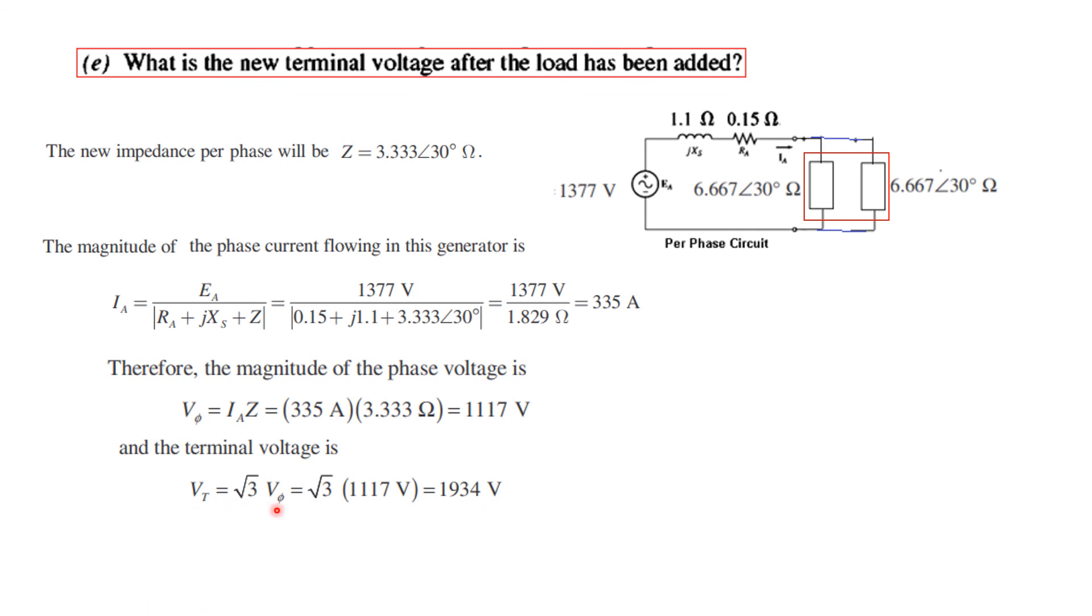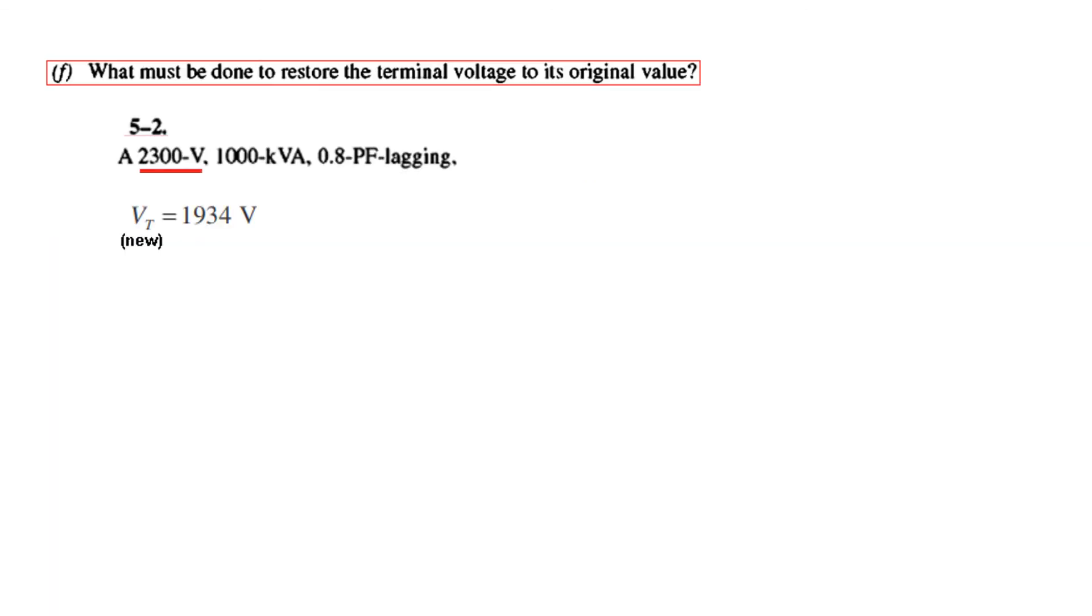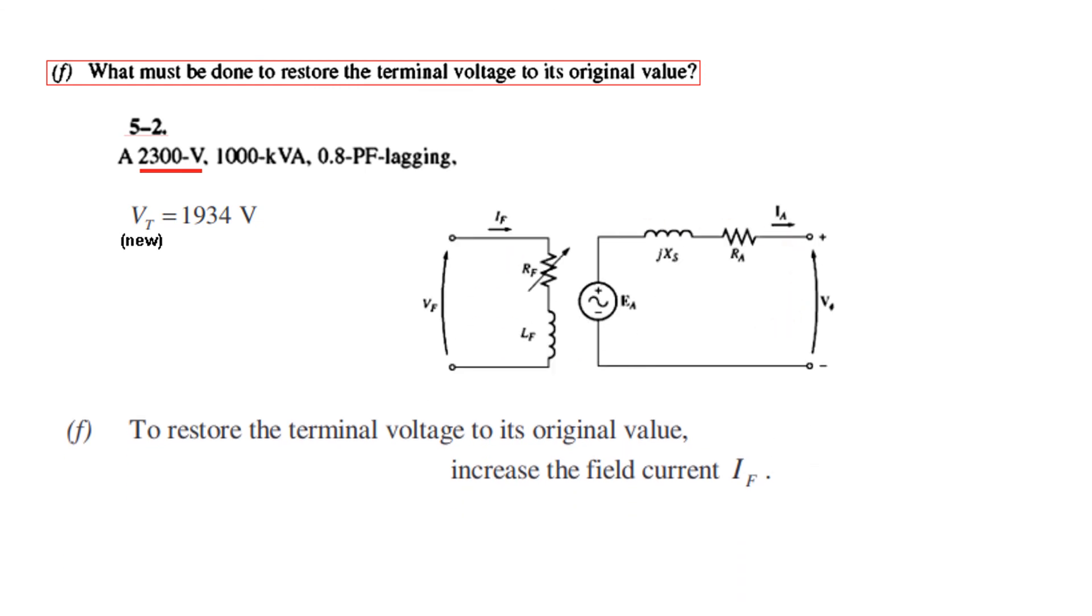Part (f): What must be done to restore the terminal voltage to its original value? The original terminal voltage was 2300 volts. To restore it, we need to increase the field current by varying the resistance, or by increasing Vf. Thank you for following this question.